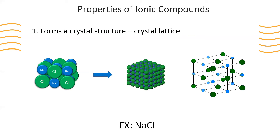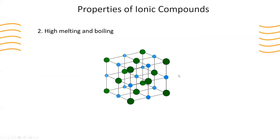The electrostatic force that bonds these formula units together within this crystal structure is responsible for our next property of ionic compounds, which is high melting points and high boiling points. The strength of the electrostatic forces holding these together requires a lot of energy to break these bonds, resulting in higher temperatures to reach the melting points and boiling points for ionic compounds.